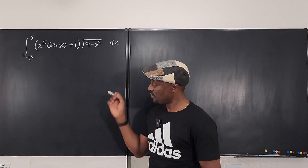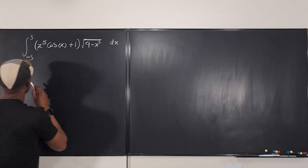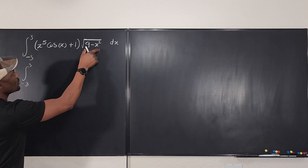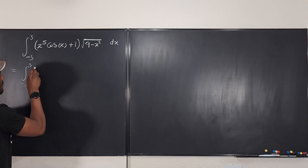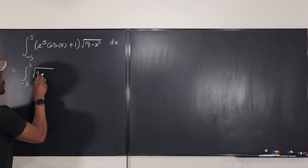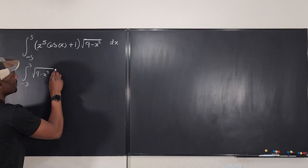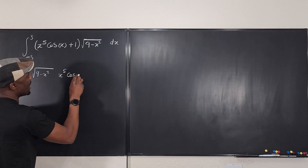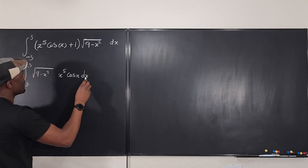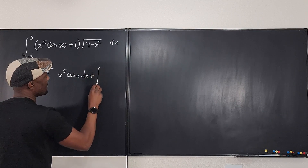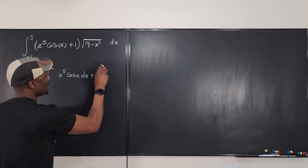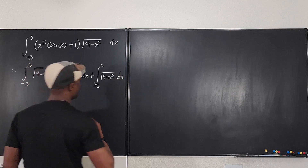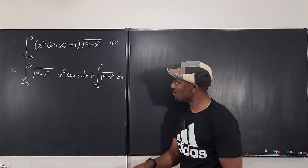The first thing we're going to do is the multiplication. So we say this is equal to the integral from negative three to three of the square root of nine minus x squared multiplied by x to the fifth cosine x dx, then we add it to another integral from negative three to three of the square root of nine minus x squared dx. Now we have two integrals.